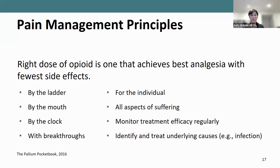When opioids bind to receptors and those receptors are blocked, our body makes more receptors — that's tolerance. We become tolerant to the medication. As a person's disease progresses, they may also have increased pain. So we expect a need to increase pain medications throughout the course of a person's disease. We also want to identify and treat the underlying cause — if it's a tumor, treatments like chemotherapy, immunotherapy, or radiation may help reduce pain.